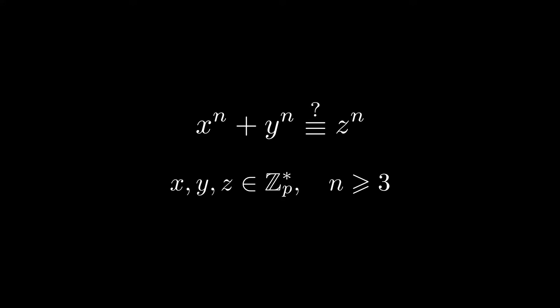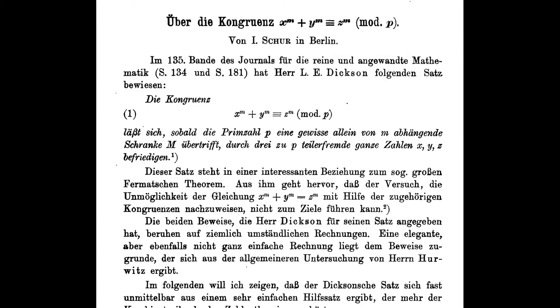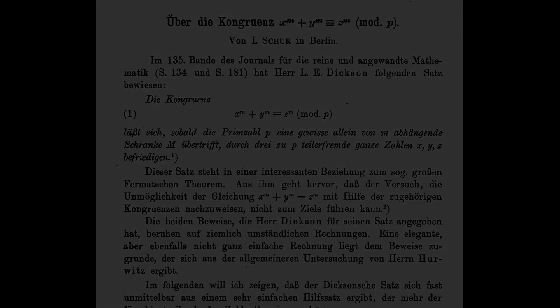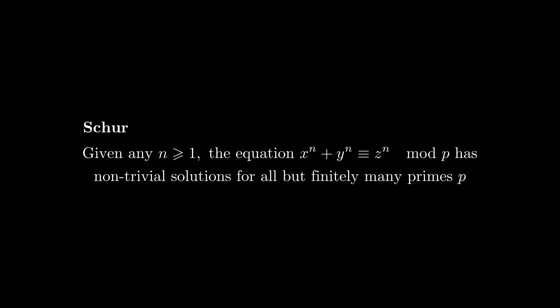Mathematician Isai Shor considered this as a possible proof tactic when he was trying to prove Fermat's original conjecture, and in 1916 published a wonderful proof showing that the theorem in fact fails modulo primes. More precisely, that given any n, the equation will have non-trivial solutions for all but finitely many primes p.